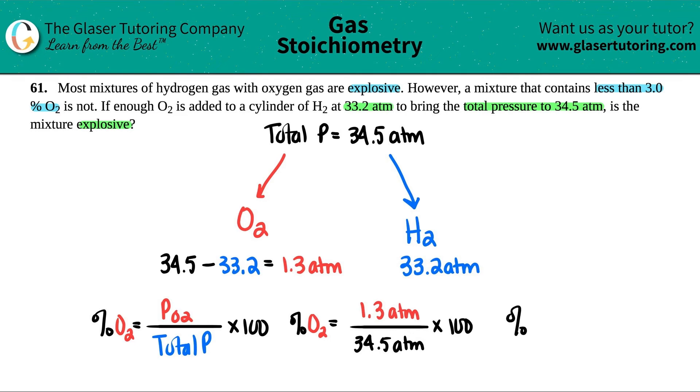So in this case, the percentage of O2 would equal, let's do the math, 1.3 divided by 34.5 times 100. And it's 3.7, we'll say 3.8 if we round it.